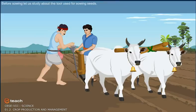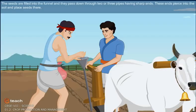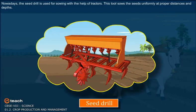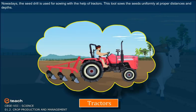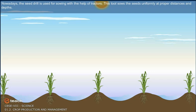Before sowing, let us study about the tool used for sowing seeds. The tool used traditionally for sowing seeds is shaped like a funnel. The seeds are filled into the funnel and they are passed down through two or three pipes having sharp ends. These ends pierce into the soil and place seeds there. Nowadays, the seed drill is used for sowing with the help of tractors. This tool sows the seeds uniformly at proper distances and depth. It ensures that the soil covers seeds after sowing.